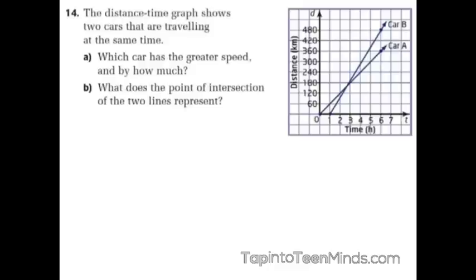Which car is going faster? Only one hand? Ricky? Car B, he says. Why do you say car B? What do you think, Anthony? It's got a steeper slope than car A. Awesome. That works very well. So it is a steeper slope. Nicely done. So it is traveling faster.